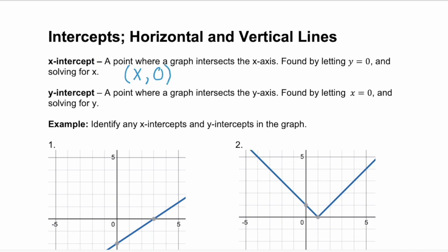The y-intercept is also a point, and it's a point where the graph intersects the y-axis. This is found by letting x equal zero and solving for y, so you end up with a zero value for your x and a y value.